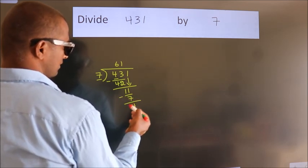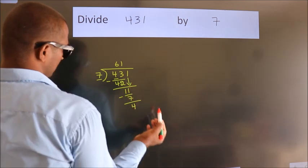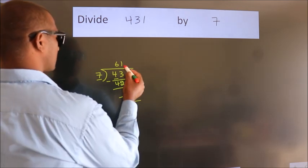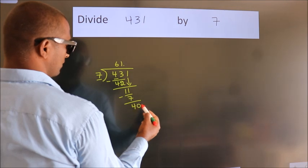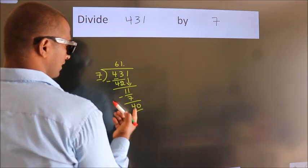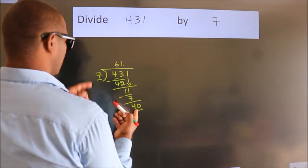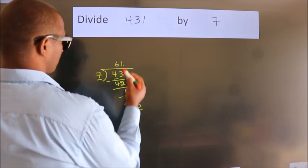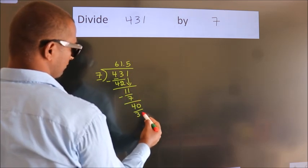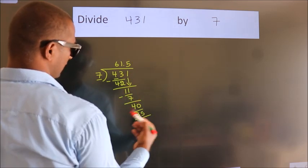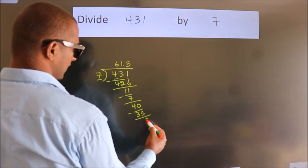After this, no more numbers to bring it down. So what we do is, we put a dot and take 0. So, 40. A number close to 40 in the 7 table is 7 times 5, which is 35. Now we subtract. We get 5.